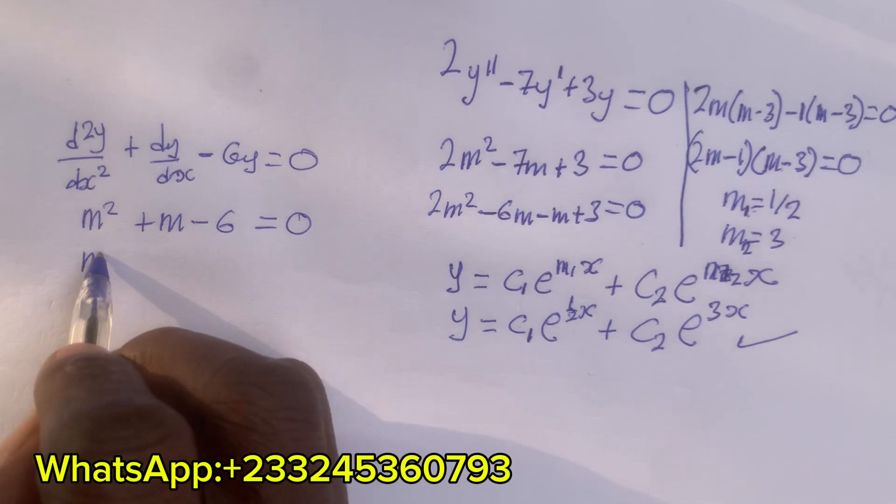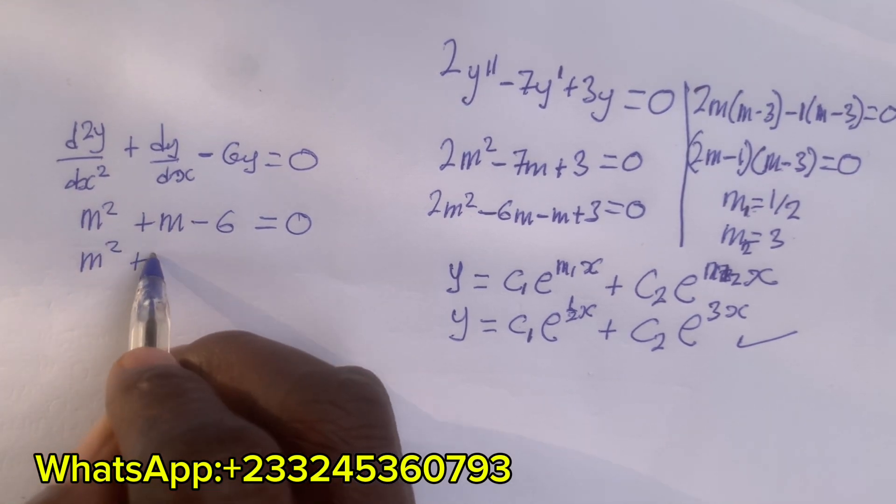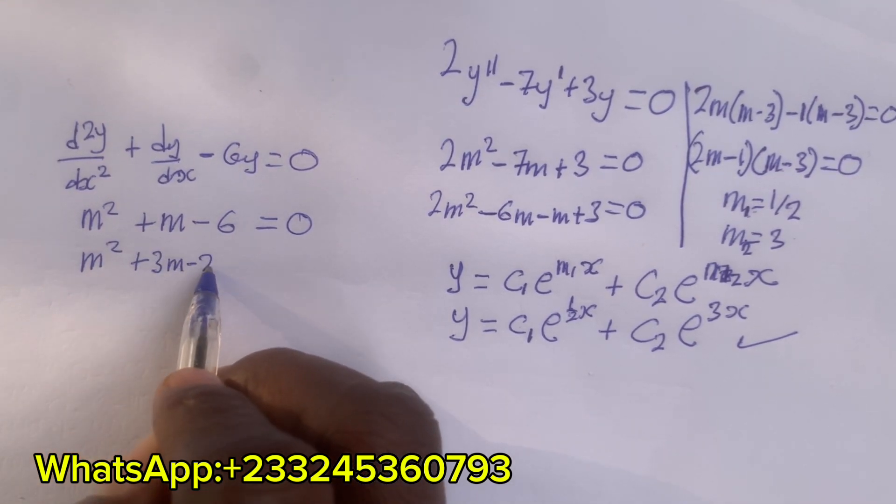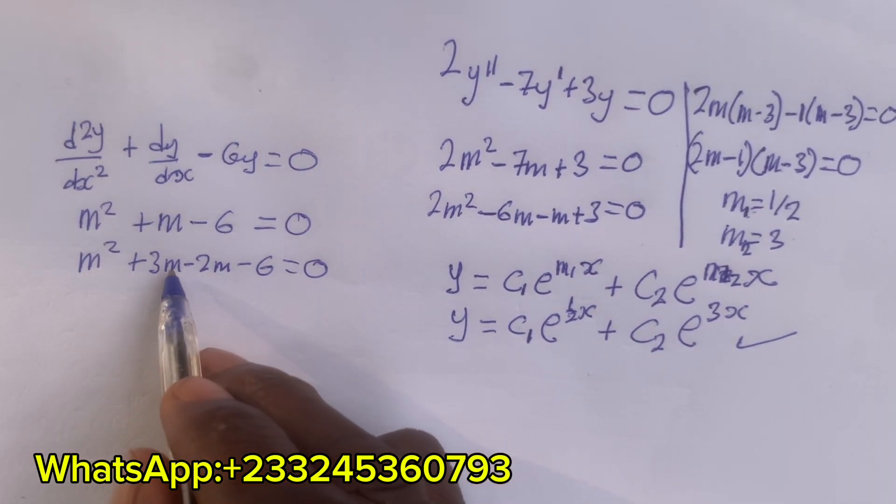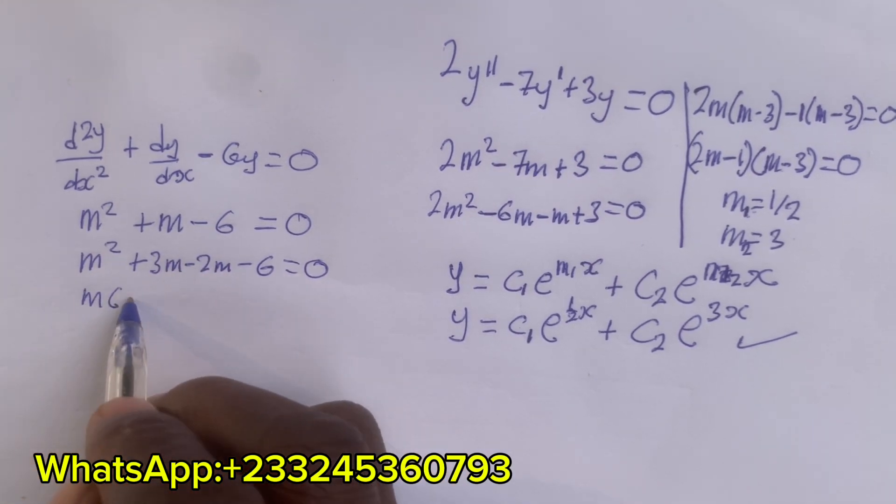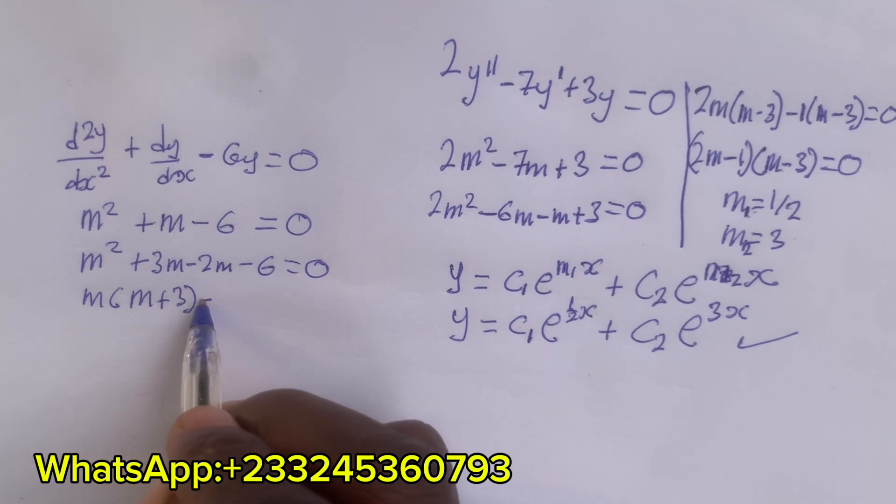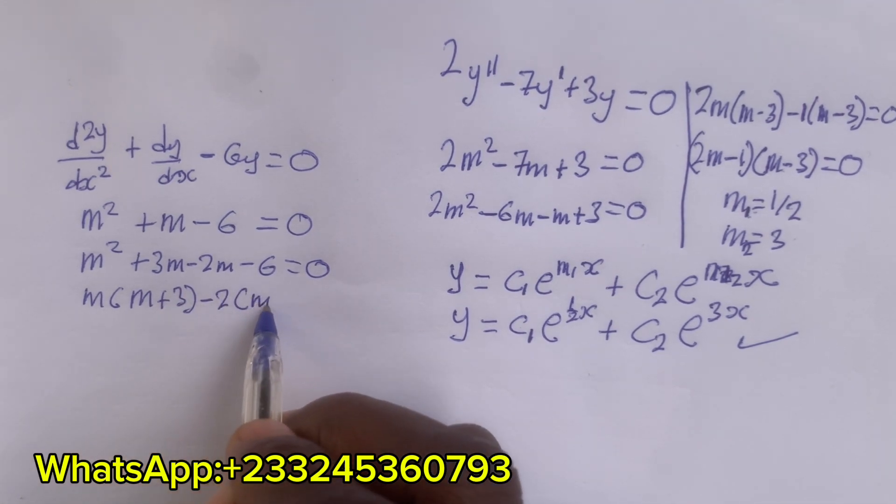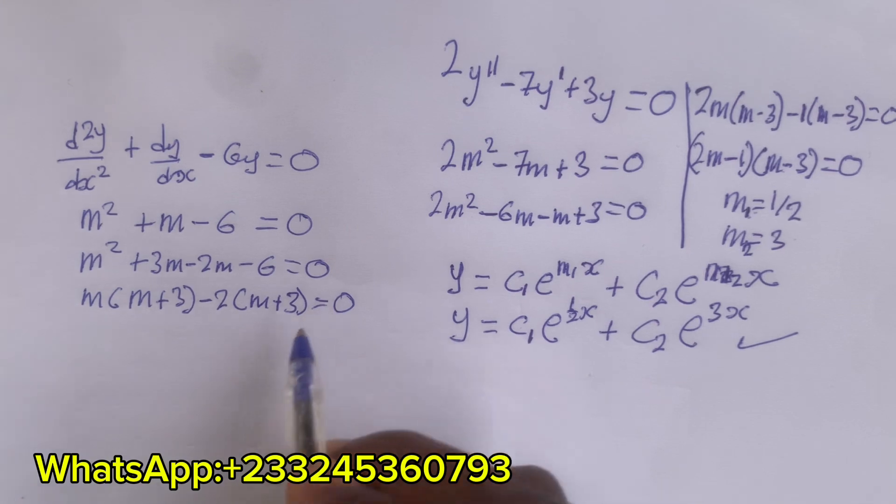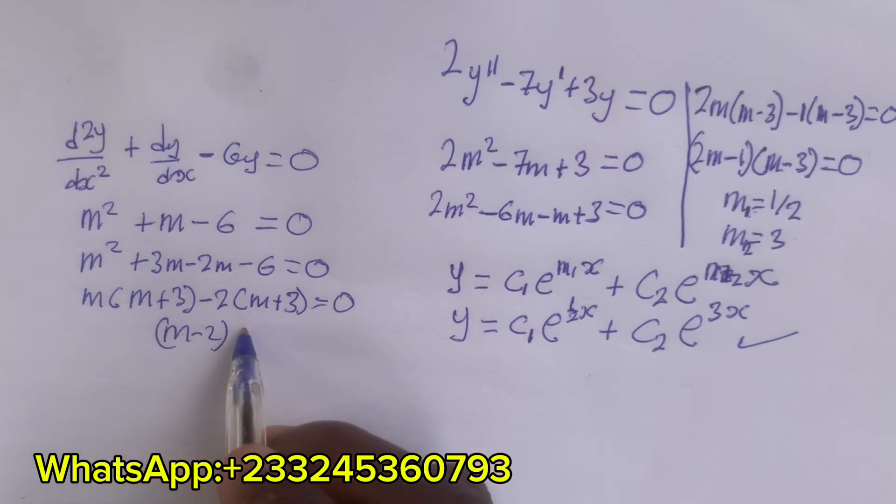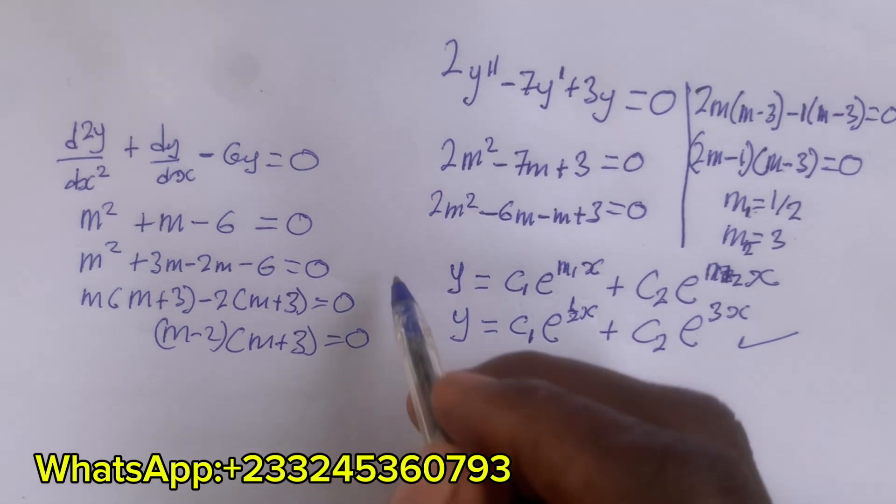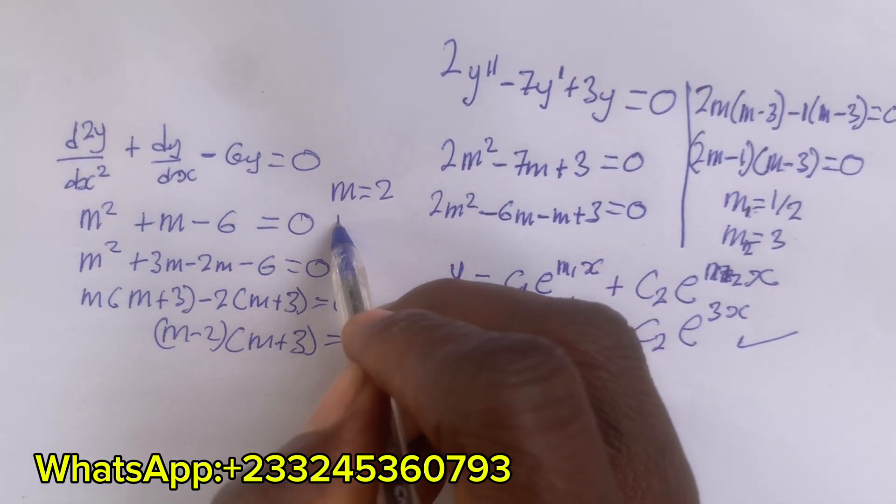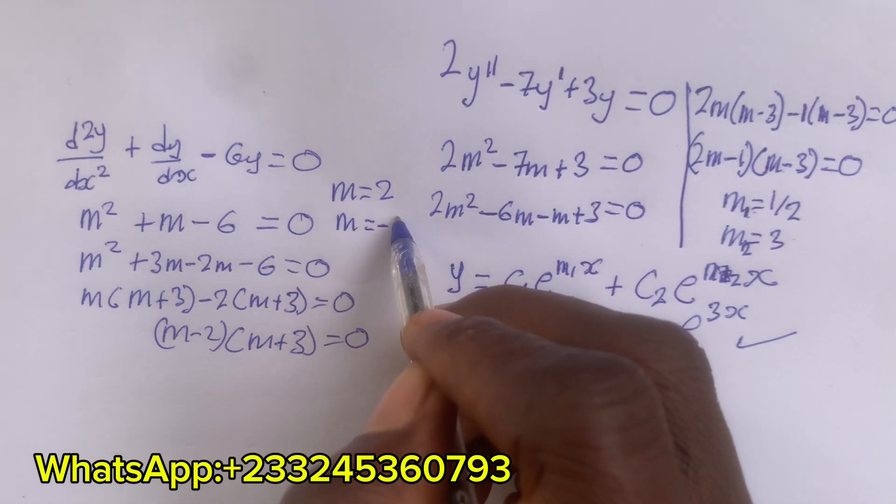We have m² + 3m - 2m - 6 = 0. I hope you know how to solve a quadratic equation. This gives m(m + 3) - 2(m + 3) = 0, so we have (m - 2)(m + 3) = 0, which gives m = 2, m = -3.